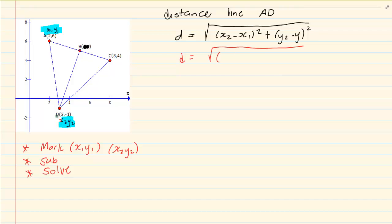We have 3 minus 2 plus and then we have minus 1 minus 6. You can then use your calculator and you have the distance is equal to the root of 50.